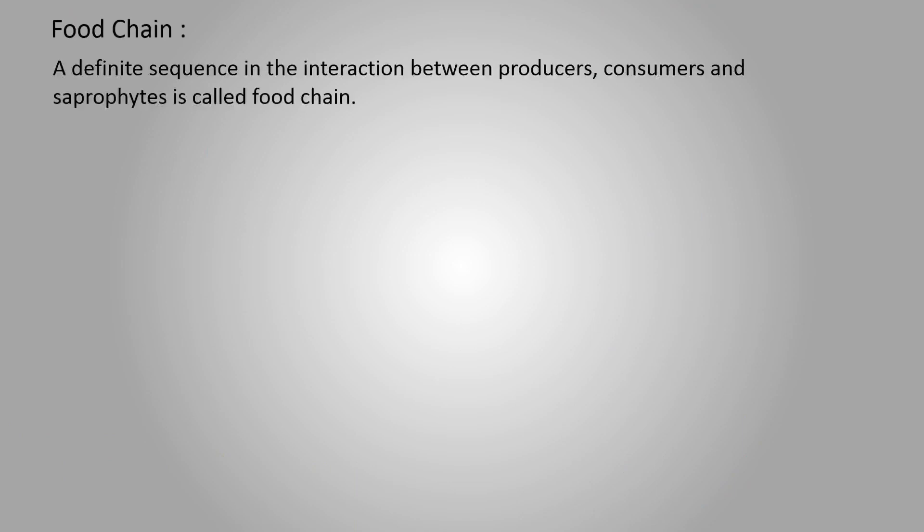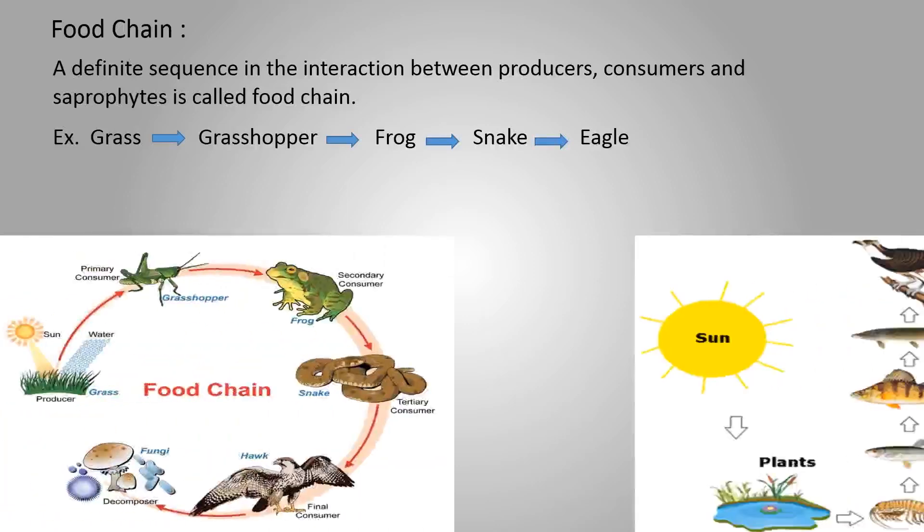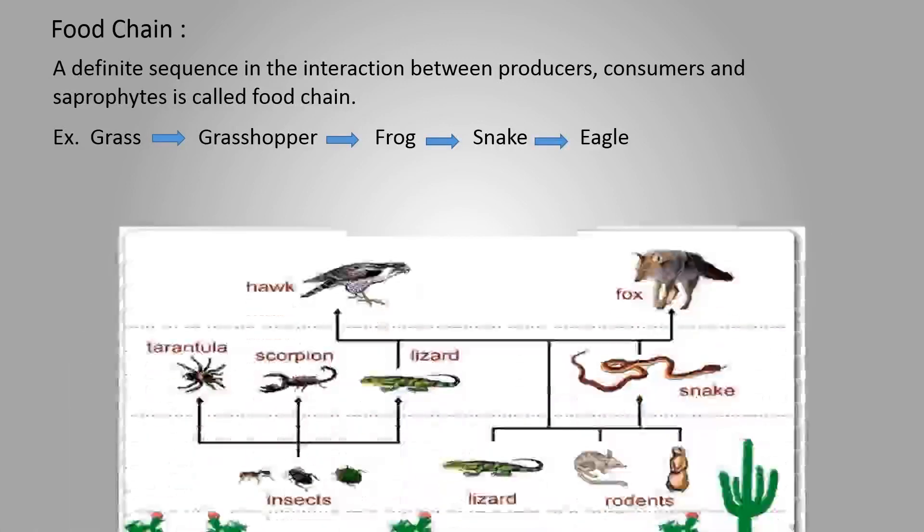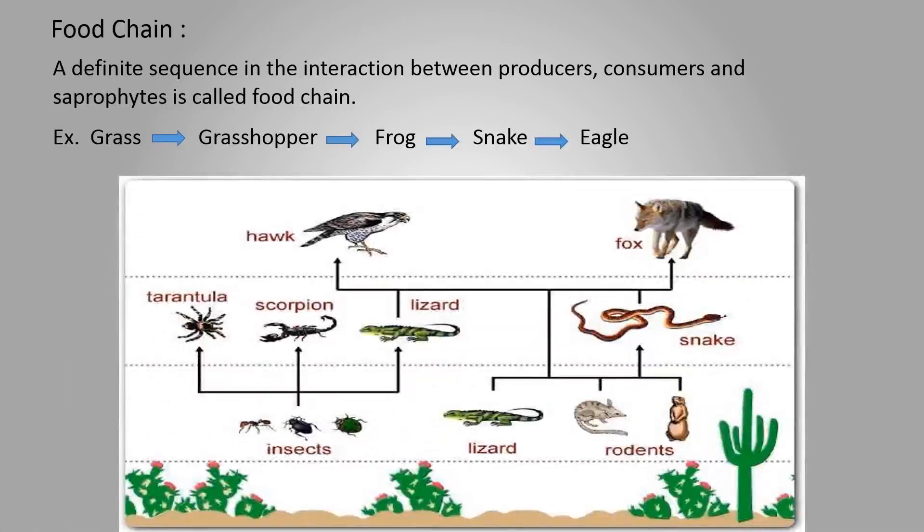So, food chain can be defined as a definite sequence in the interaction between producers, consumers and saprophytes. This is just one example of food chain. An ecosystem consists of many such food chains which are interconnected at various levels forming an intricate web instead of linear chain. Let's understand how.